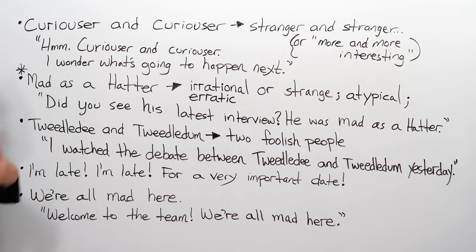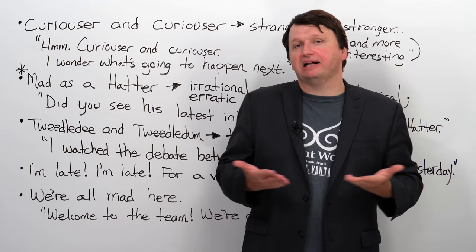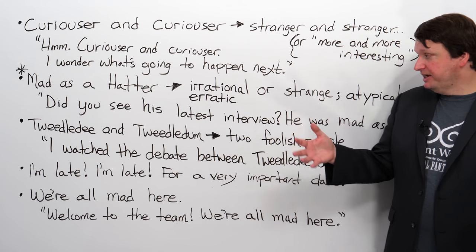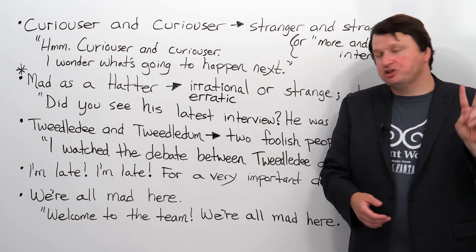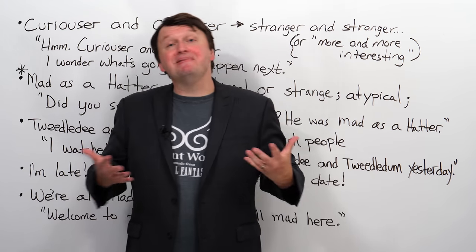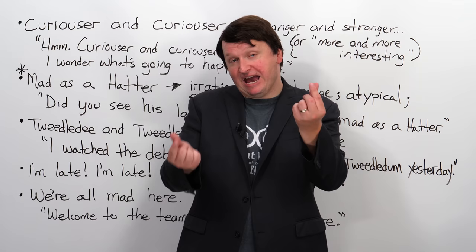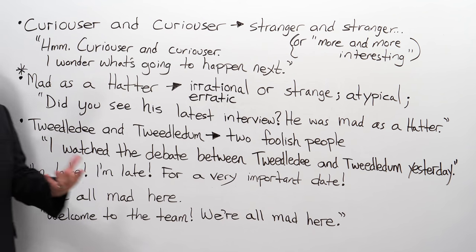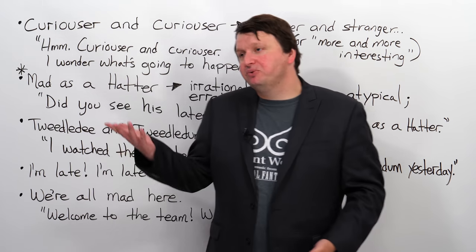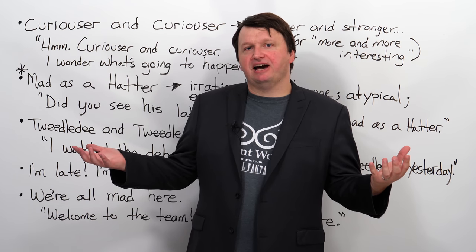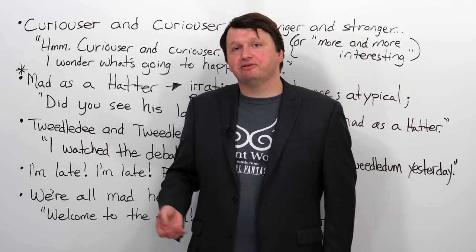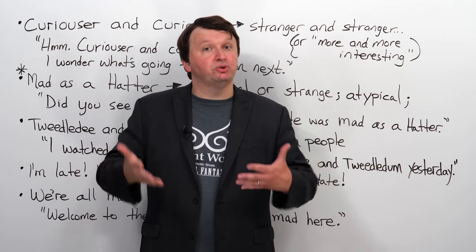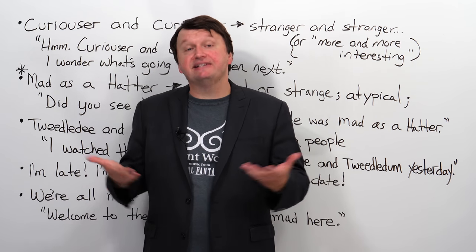'Tweedledee and Tweedledum.' These are two characters in the book who are fools or clowns, essentially — very playful. The phrase 'Tweedledee and Tweedledum' refers to two foolish people. This can often be used in a comedic way when talking about politics and two political candidates. For example: 'I watched the debate between Tweedledee and Tweedledum yesterday.' If you're cynical about politics and feel two candidates are foolish clowns who shouldn't be in politics, you can say, 'There's Tweedledee and Tweedledum.'